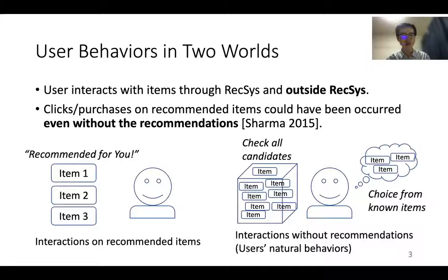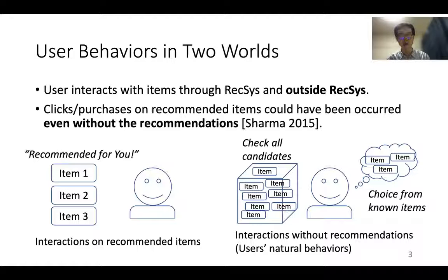A user interacts with items through recommender systems and outside the recommender systems. The left figure illustrates the interactions on recommended items. A recommender system chooses several items for a user, and the user might choose some of them. The right figure illustrates the interactions without recommendations. A user might check all candidates, especially when the number of candidates is small. For example, in a restaurant, we might look through all dishes in the menu list.